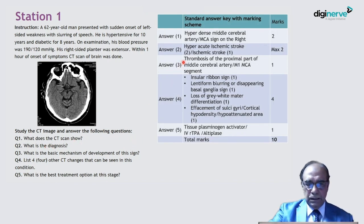For the first question CT findings, there is a hyperdense middle cerebral artery sign. This is sign. Hyperdense middle cerebral artery sign, or you can write MCA sign on the right.